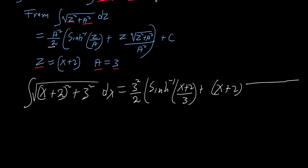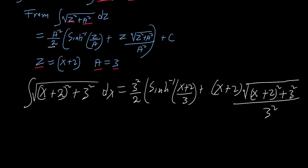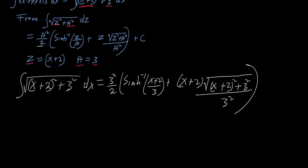Then root of z squared plus a squared, which is the same as root of (x+2) squared plus 3 squared, over 3 squared — put this in parenthesis plus C.